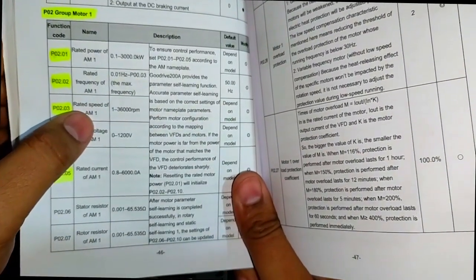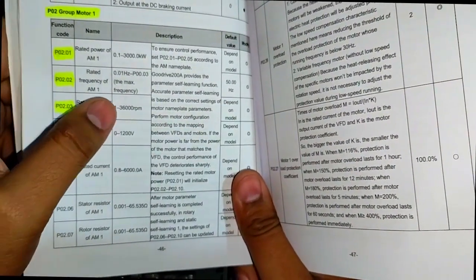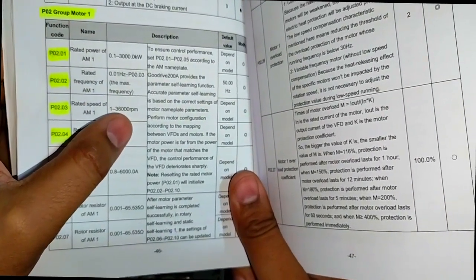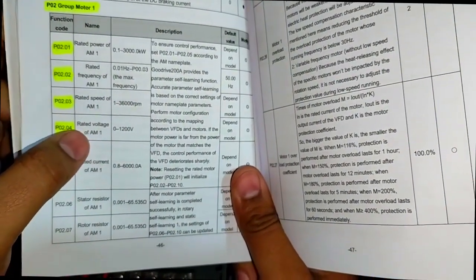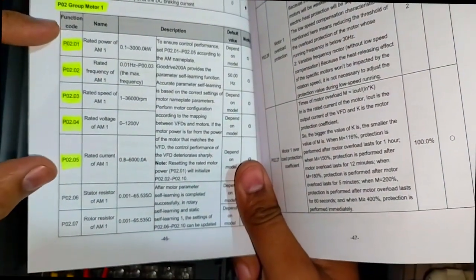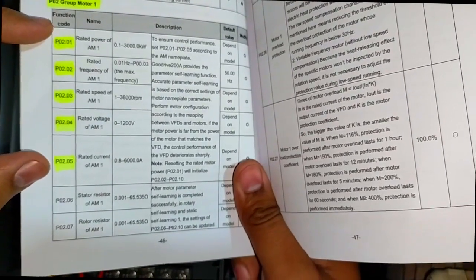Rated speed of motor. We have to specify this to the VFD. We have to inform the VFD about the motor. Different VFDs have different motor requirements.